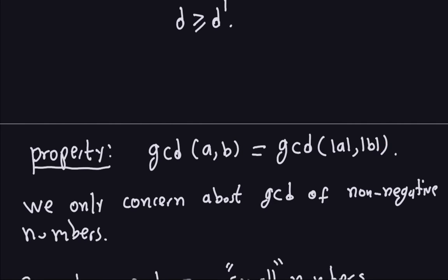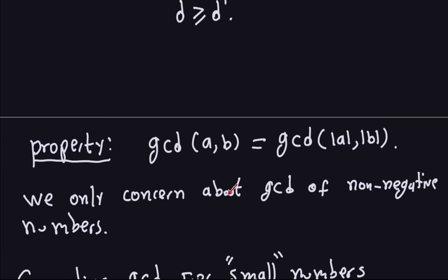For example, the greatest common divisor between negative 20 and negative 40 is exactly the same as the GCD between 20 and 40. The GCD remains unchanged if you take the absolute value of the integers. So we're not going to concern ourselves with the GCD of non-negative numbers — that's the only reason for this property.